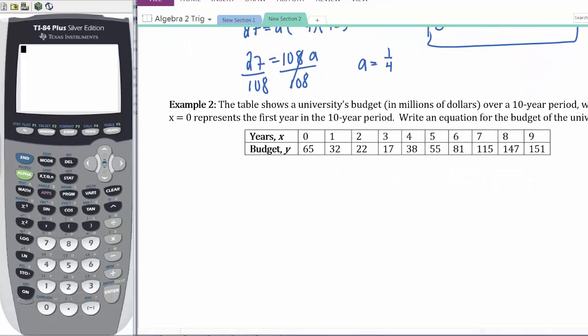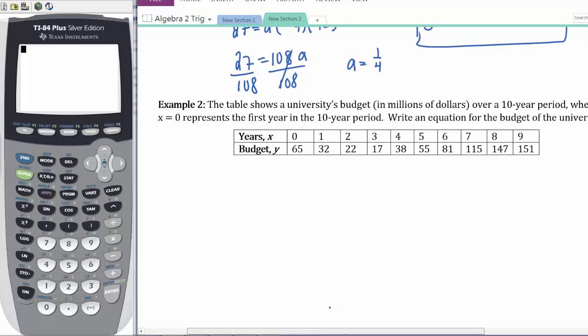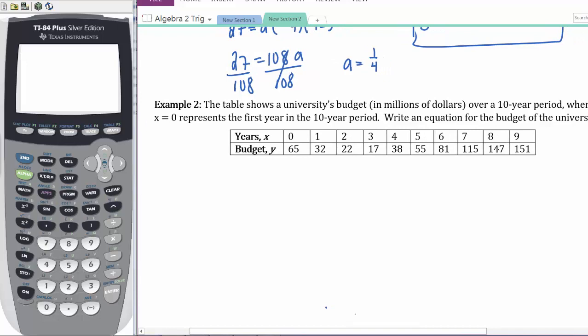For the rest of this, you absolutely need your graphing calculator. If you don't have that handy, take it out right now and follow along with all the buttons we're going to press. Example 2: The table shows a university's budget in millions of dollars over a 10-year period, where x = 0 represents the first year. Write the equation for the budget. We have x and y, and we're going to use our calculators.